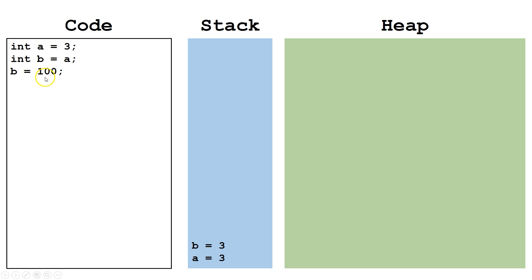Here, we modify b to equal 100. We simply change the entry on the stack for b to equal 100.